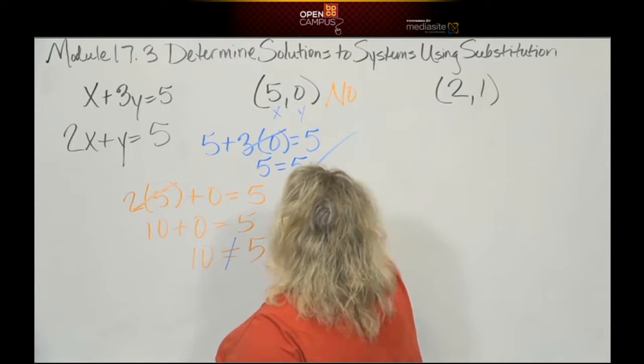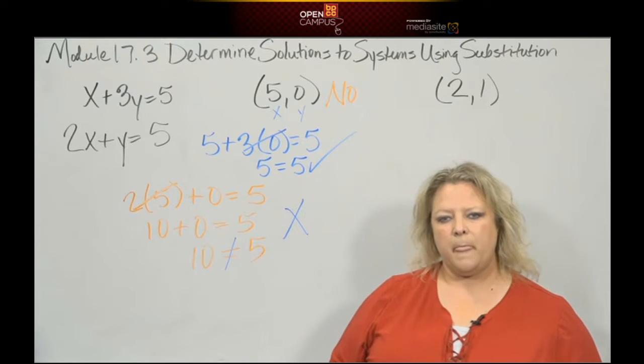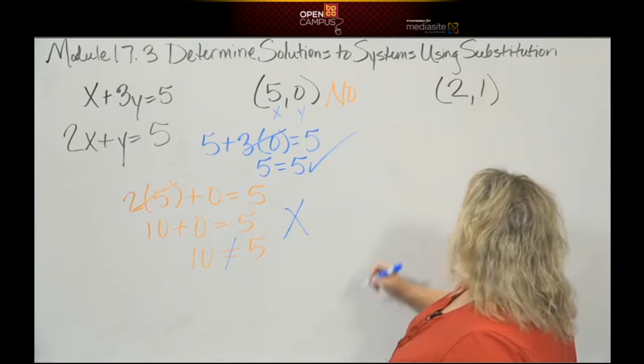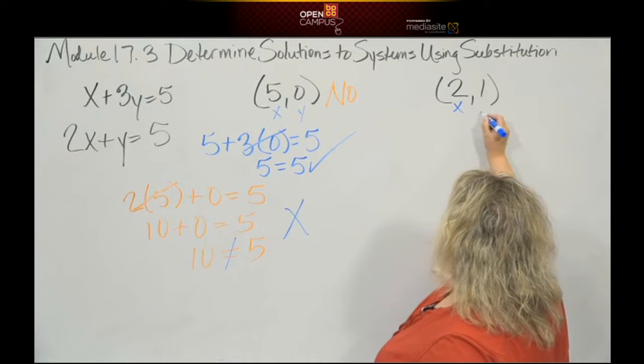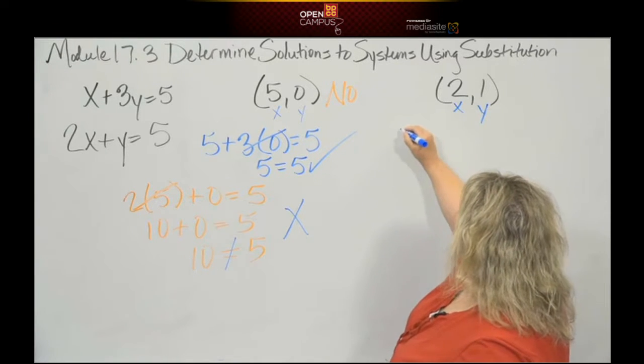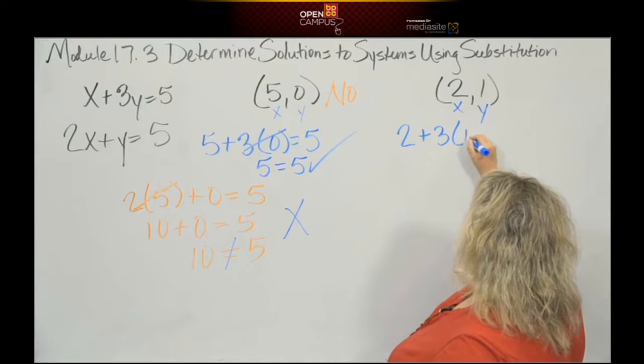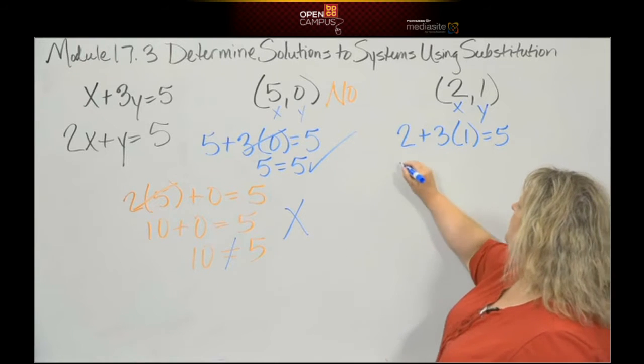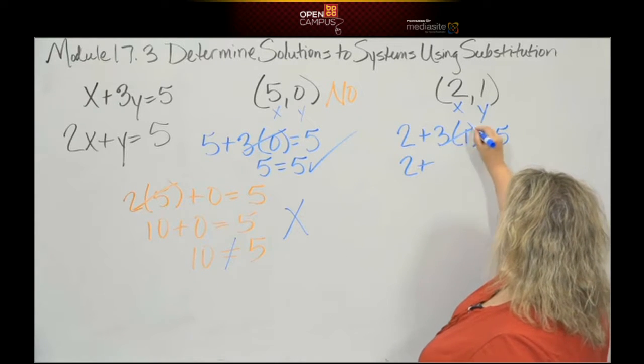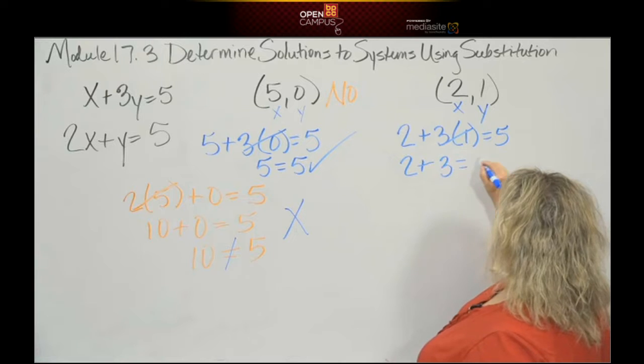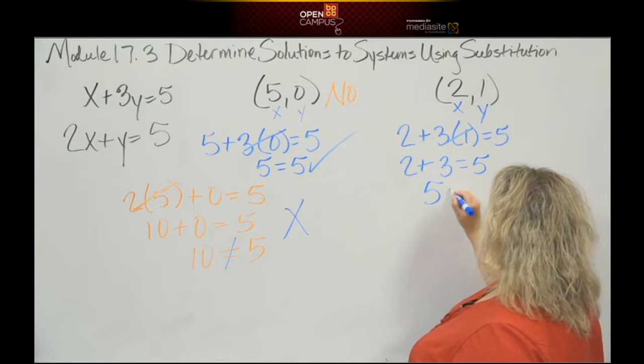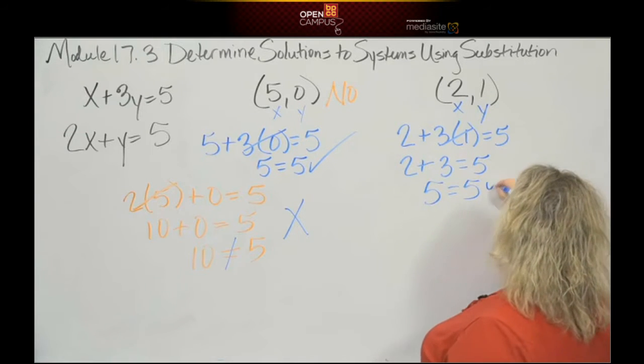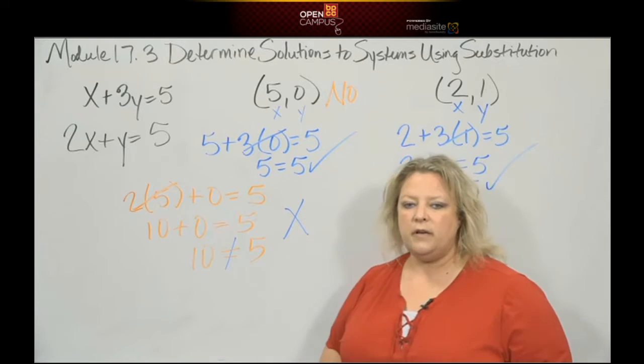Now let's try the other one. The top equation: these are x, these are y. That'll be 2 plus 3 times 1 equals 5. When I do my multiplication, that's 2 plus 3—because 3 times 1 is 3—equals 5. Two plus three is five. Five does equal five. Look at that—the first one is true.